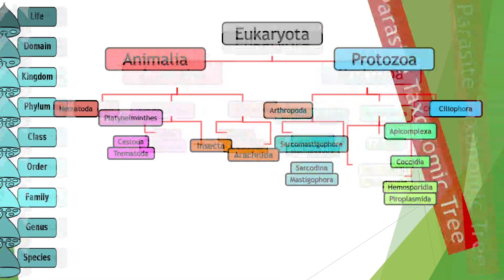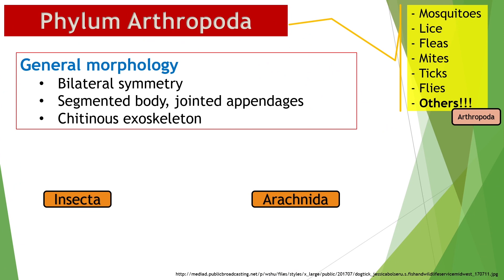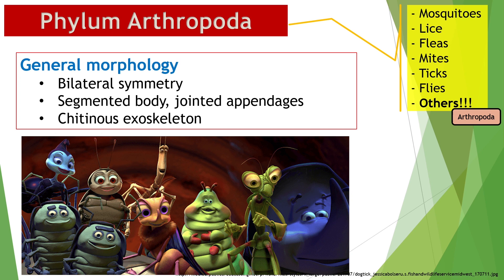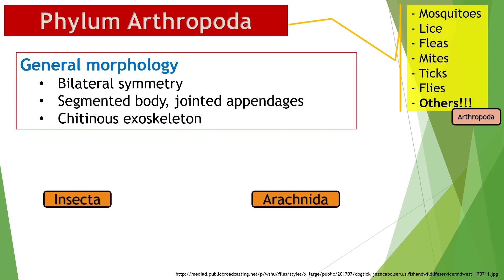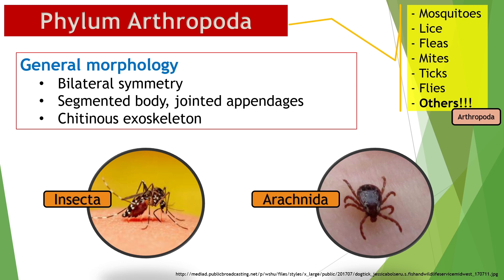There are numerous genera of arthropods that can be considered as human parasites, but the ones here represent only the more commonly referred ones. Other parasitic arthropods include cockroaches, caterpillars, hornets, and wasps, and a bunch of other nasty bugs. Most parasitic arthropods are ectoparasites, while some are also vectors to other parasites. Parasitic arthropods generally have bilateral symmetry, segmented body and jointed appendages, and a chitinous exoskeleton. The more common parasitic arthropods belong to two classes: the insects and the arachnids.